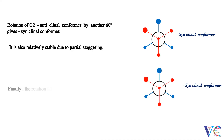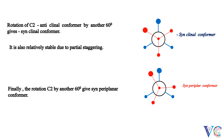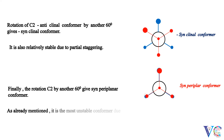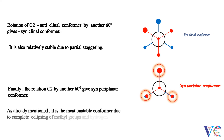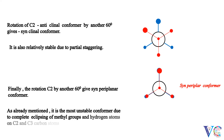Finally, the rotation of C2 by another 60 degrees gives the syn-periplanar conformer. As already mentioned, it is the most unstable conformer due to the complete eclipsing of methyl groups and hydrogen atoms on C2 and C3 carbon atoms.